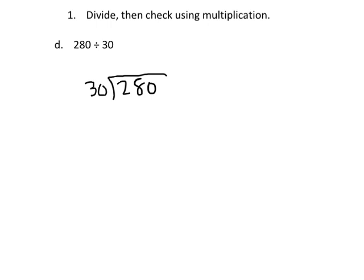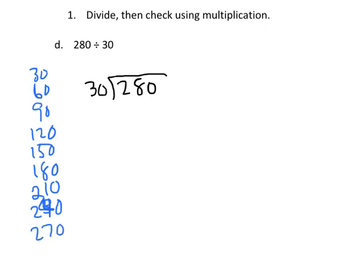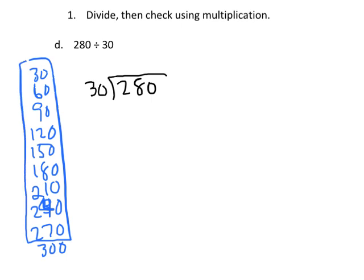A couple ways to figure out what our multiplier, what our quotient should be. I'm going to use skip counting: 30, 60, 90, 120, 150, 180, 210, 240, 270, 300. We finally crossed over our goal of 280 and that tells us it should be 1, 2, 3, 4, 5, 6, 7, 8, 9.